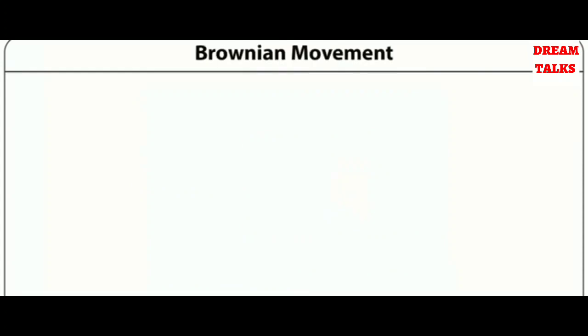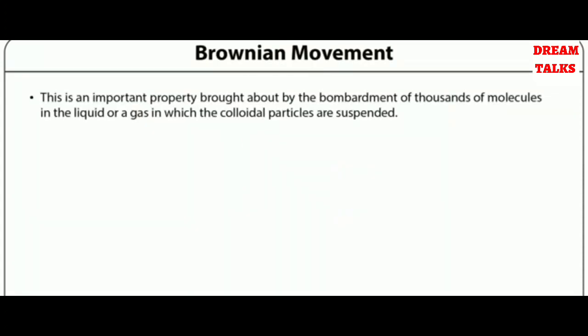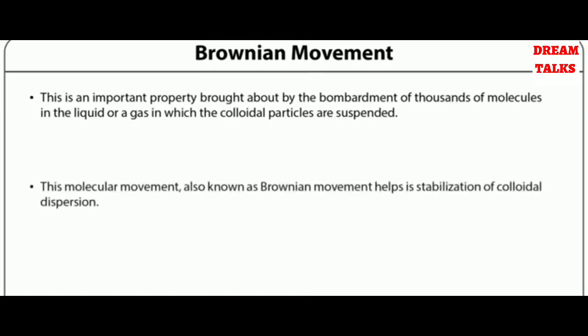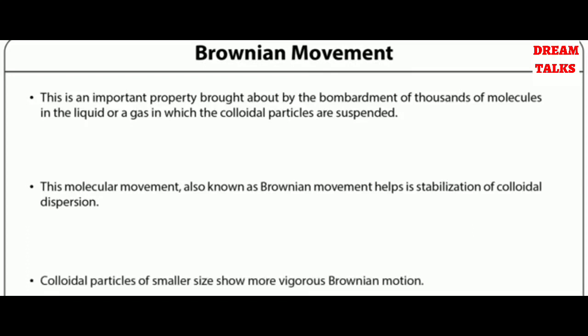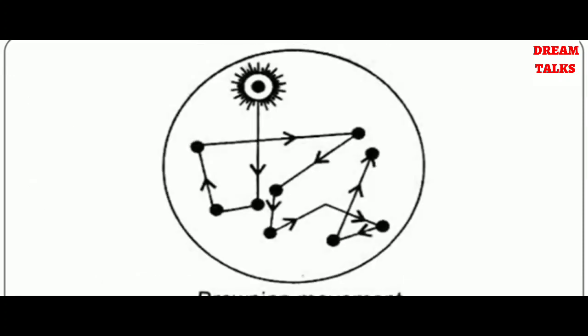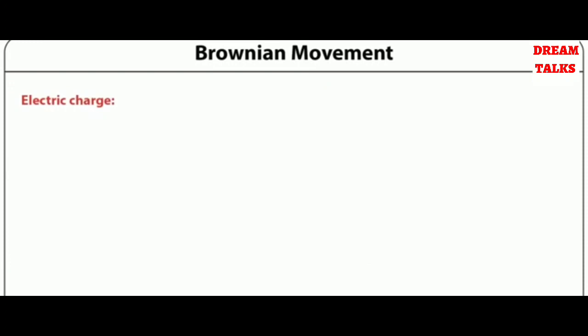Brownian movement is an important property brought about by the bombardment of thousands of molecules in the liquid or gas in which the colloidal particles are suspended. This molecular movement, also known as Brownian movement, helps in the stabilization of colloidal dispersions. Colloidal particles of smaller size show more vigorous Brownian motion.